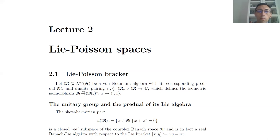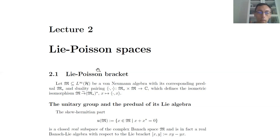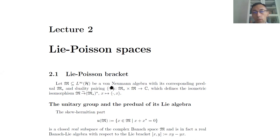I recall the two basic pieces of notation from yesterday: H is a complex Hilbert space and M is a Von Neumann algebra, meaning it is a subalgebra of L-infinity of the bounded linear operators on H, closed under taking adjoint operators and also closed under a certain weak topology. This closeness property with respect to that weak topology was equivalent to the fact that the algebra admits a predual — it is a dual of a certain Banach space denoted by M-star.